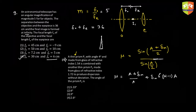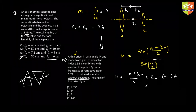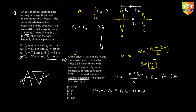Deviation depends on the refractive index as well as the angle of the prism. If the combination produces no net deviation, the deviation created by the first prism must be countered by the second prism — the second is kept inverted so the ray through it emerges parallel, and the two deviations cancel. So (μ1 − 1)·A1 must equal and be opposite to the deviation from the second prism.